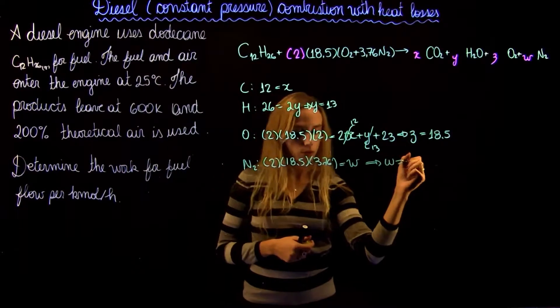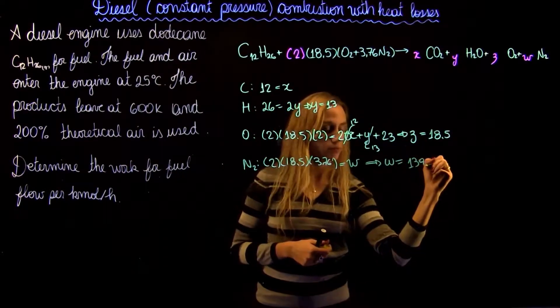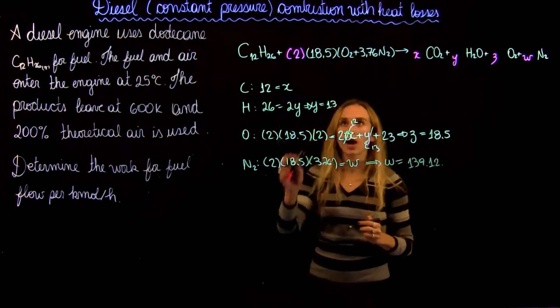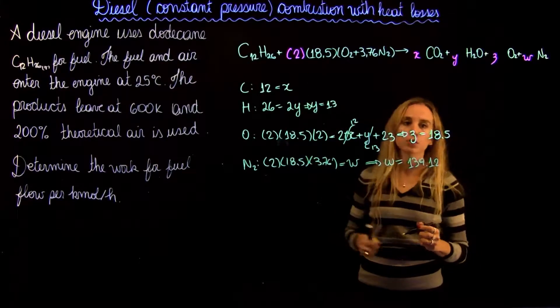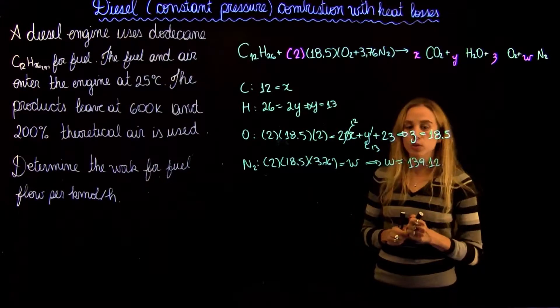we're going to have 2 times 18.5 times 3.76 equals 2w. And we're going to find the value of w of 139.12. If you're not sure how we got the 18.5, just go back to the previous video and follow the steps.